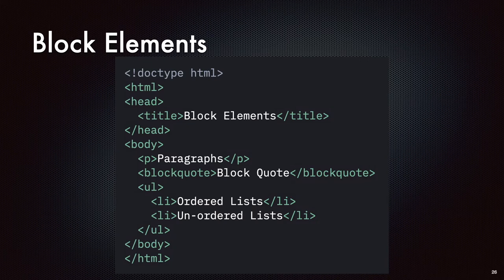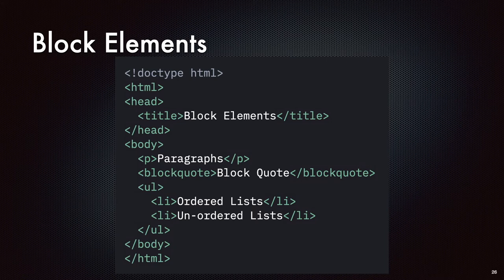The specification today doesn't say anything about block elements as a category — each element is individually defined as to how it should be displayed. Looking at what were block elements: paragraphs, blockquotes, and lists, both unordered and ordered. You can see why blockquote got its own element early on — scientific and academic papers have lots of quoting. The specification had things like blockquote and citation, but not e-commerce checkout or telephone number fields.